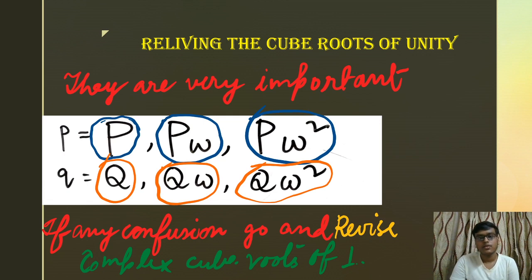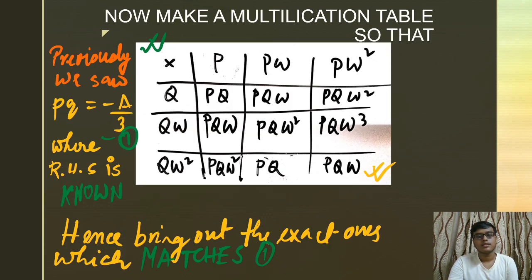How can we eliminate the redundant or not feasible solutions? The best way to do that is we know pq = -a/3, which is our known factor. Coefficients of the equations are known to us. We can simply put pq = -a/3.